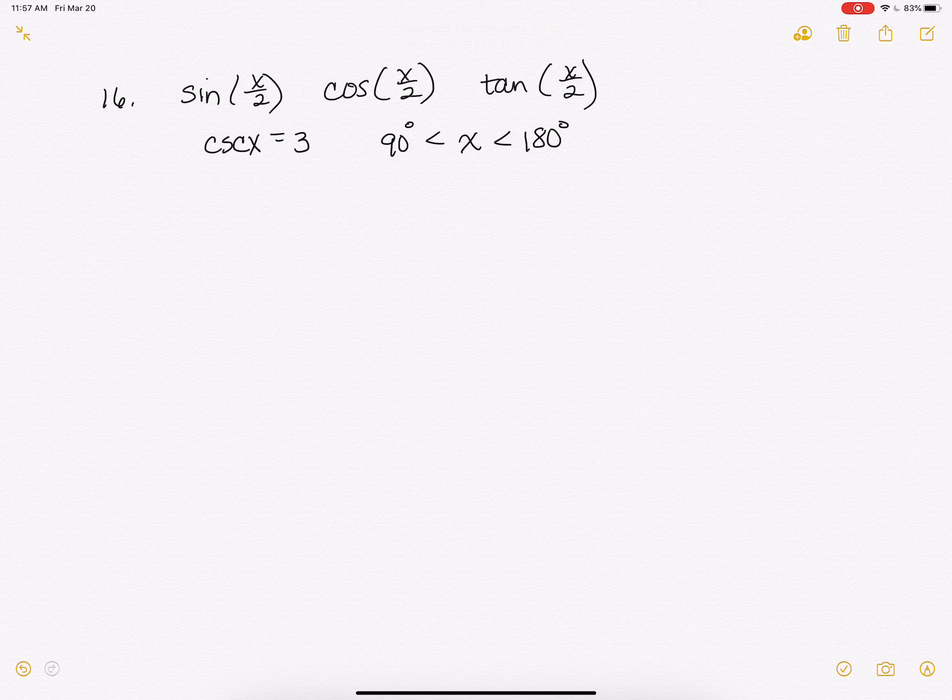So this is the information they've given us, that cosecant of x is 3 and that x is between 90 and 180.